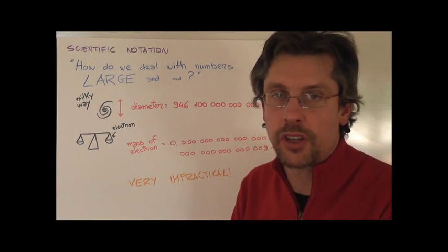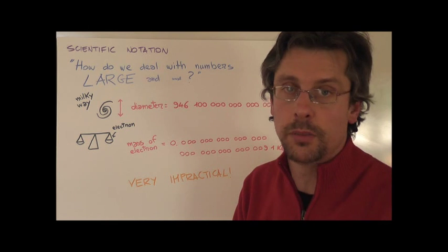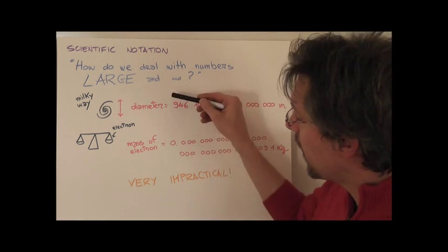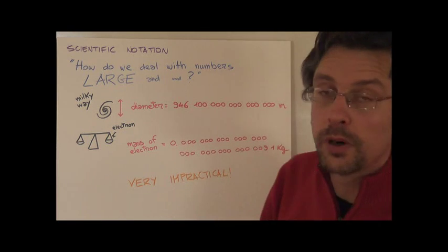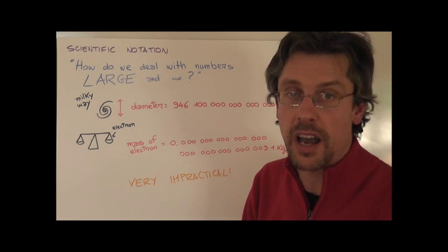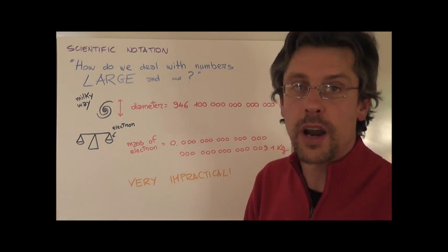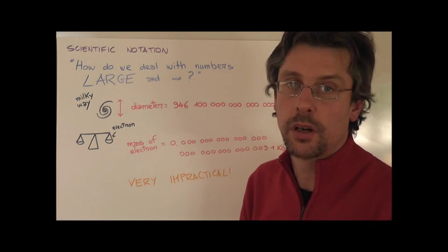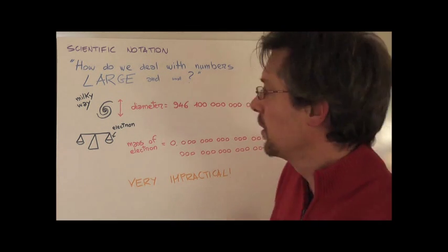Now, you can already imagine that if you were an astronomer or a particle physicist, writing these numbers in such a form would be very impractical. So scientists have devised a way of writing the same number in a much more compact way. How? Let's see.